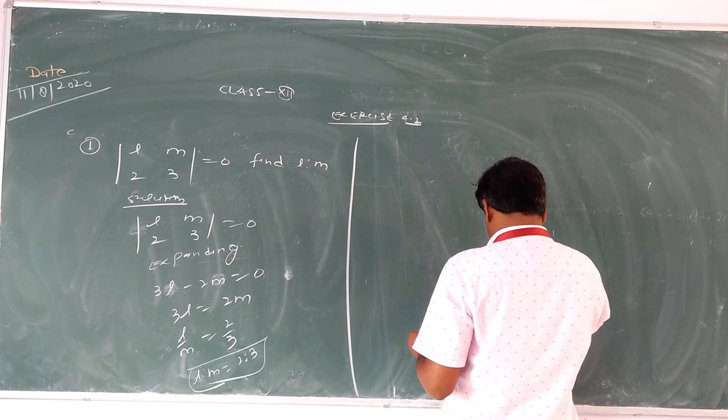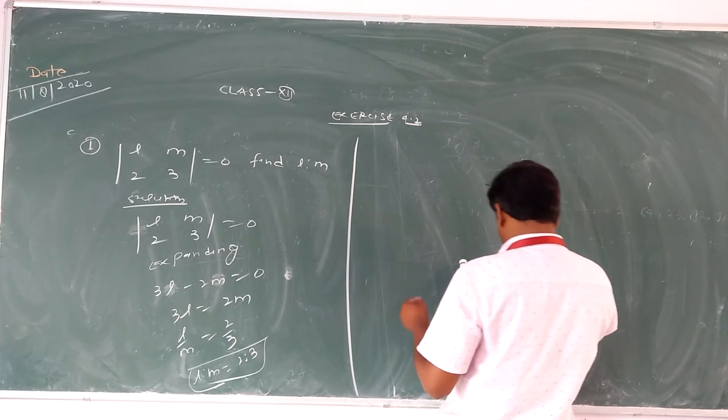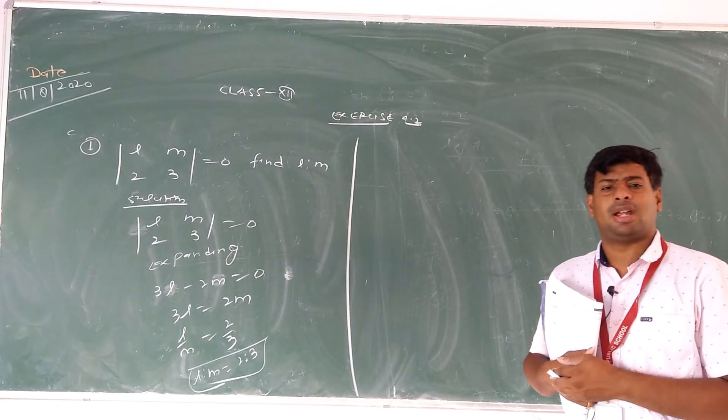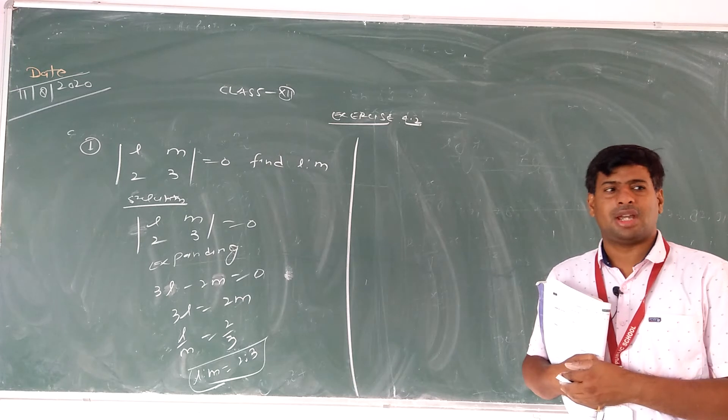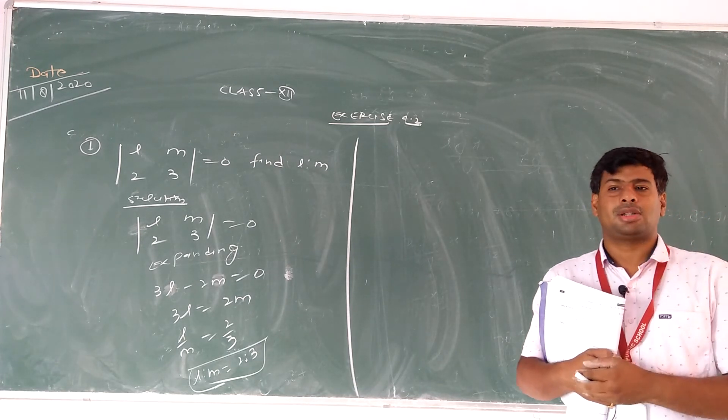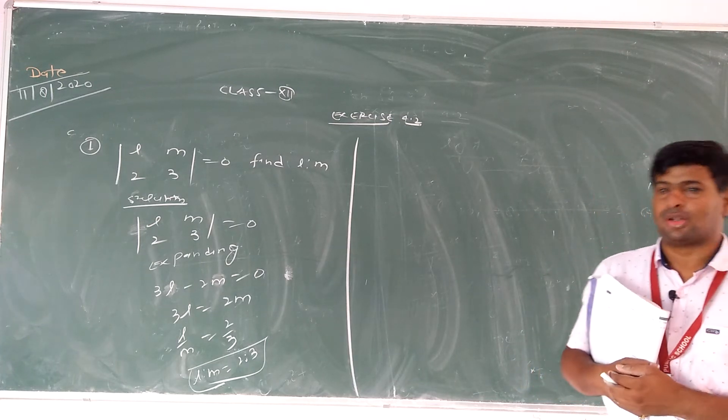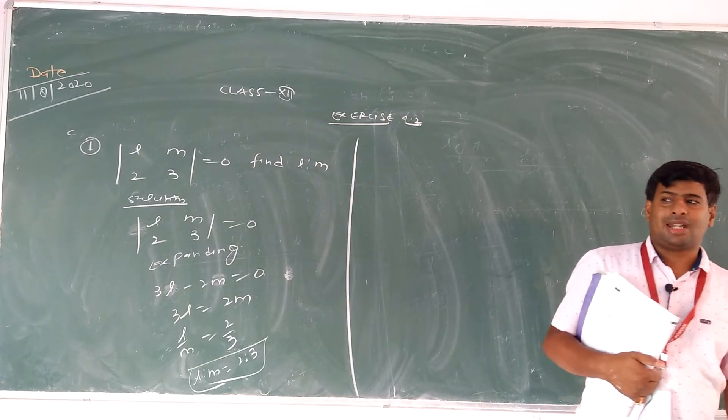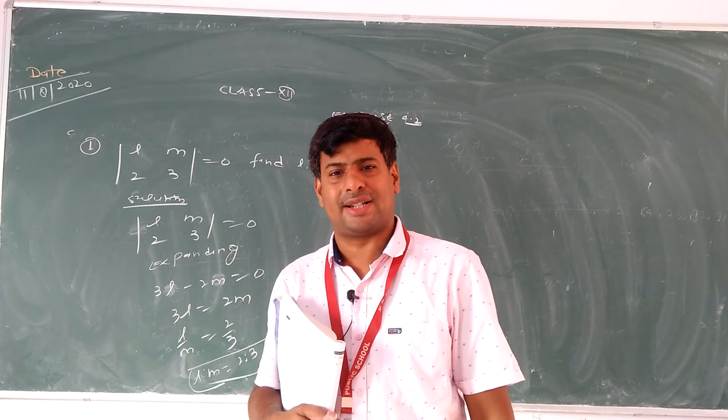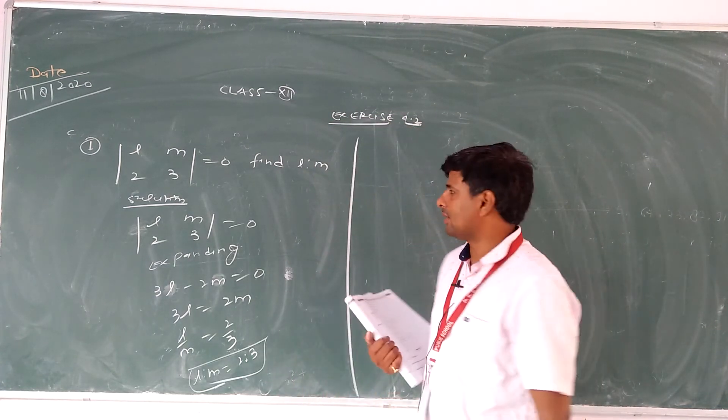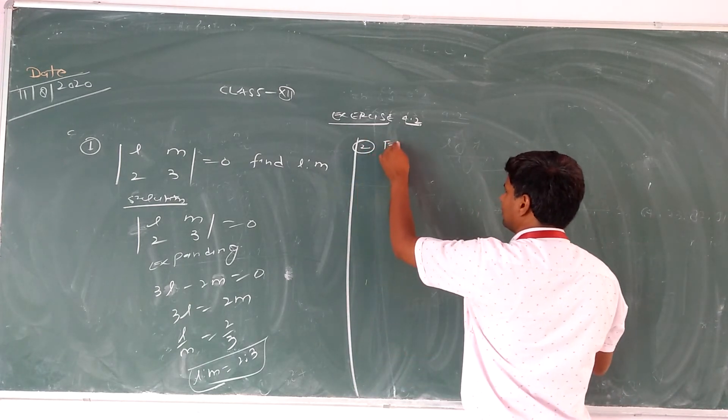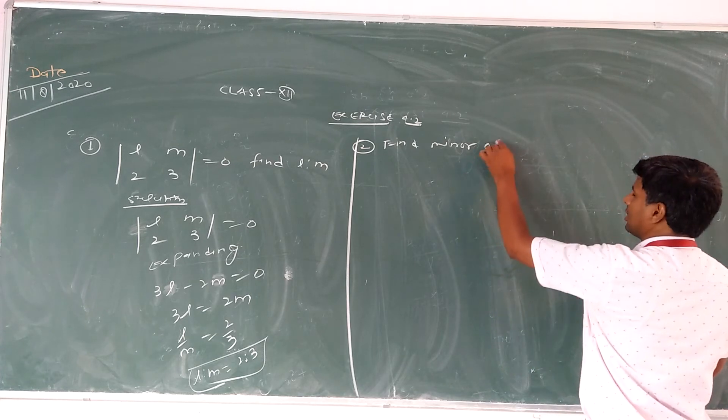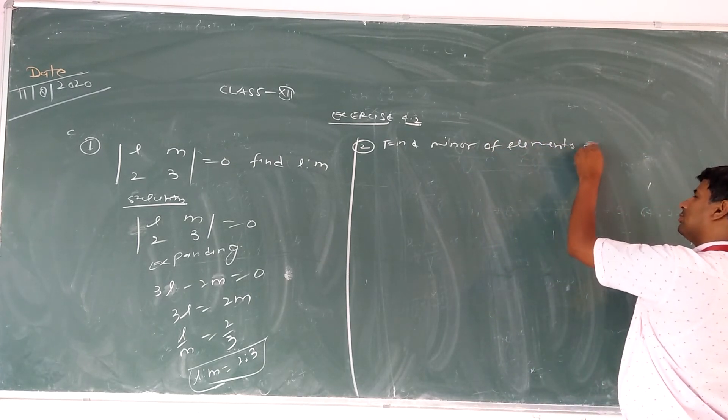Second question: find the minor of the elements of second row of the determinant. In previous class we also explained about minor and cofactor. Minor means we have to find the determinant by deleting the corresponding row and column of given elements.